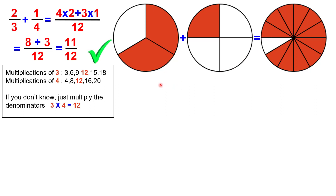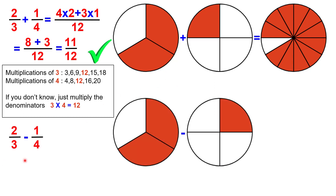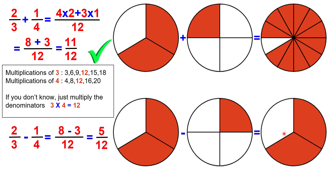Now let's do the same with subtraction: 2 thirds minus 1 quarter. Again, we need to find the least common denominator — we already know that for 3 and 4, the LCD is 12. Instead of adding them, we need to subtract: 8 minus 3 is 5. So the result is 5 over 12. And you can see it here on the right-hand side as well. 5 over 12 is the result of 2 thirds minus 1 quarter.